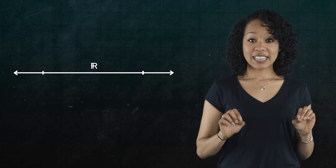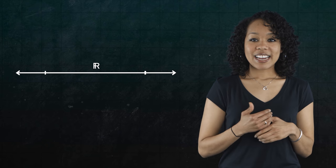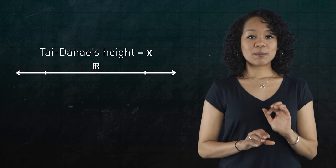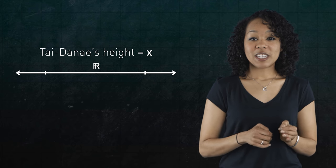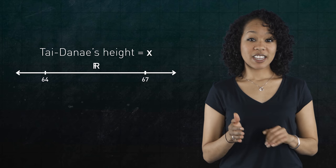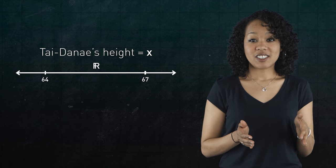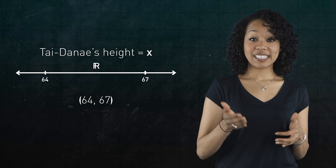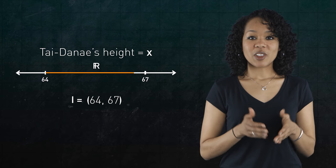To discover the answer, let's think about something simple, like the set of real numbers, the number line. And let's say that my height is some number x. I won't tell you what x is, but suppose you'd like to verify if it's bigger than 64 inches but smaller than 67 inches. Does x lie in the open interval 64, 67? Let's call this interval i.